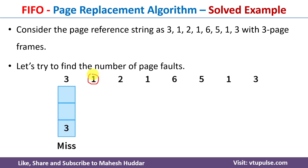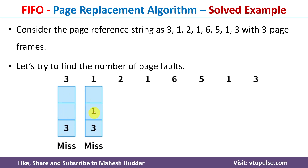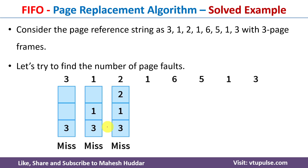We go to the next page reference: 2. Again it is not present, so there is a miss, and 2 is placed in the next frame. Right now front is pointing to 3 and rear is pointing to 2, because 3 entered first and 2 entered most recently.